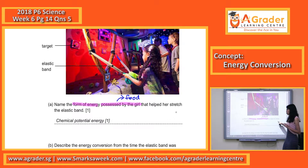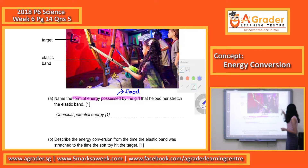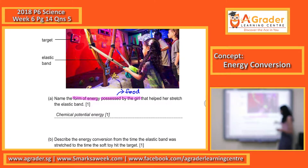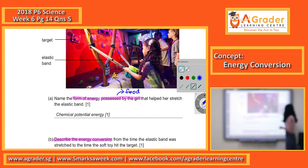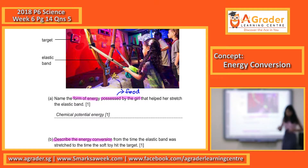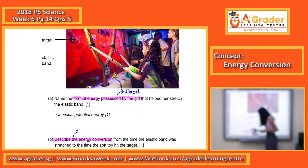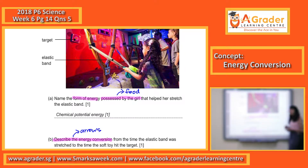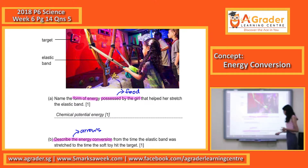Part B is asking you to describe the energy conversion. The moment you see this — describe the energy conversion — you have to take note that you are supposed to use arrows to link up different energy forms and show how they are converted from one form to another. They want you to start from the time the elastic band was stretched to the time the soft toy hits the target.